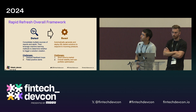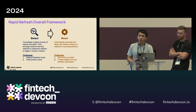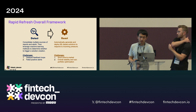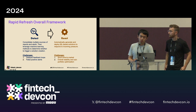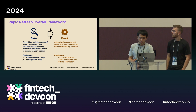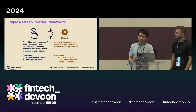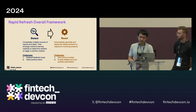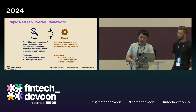Our rapid refresh framework consists of two main parts. The first part is about detection: it determines when is the right timing to trigger a solution refresh. The react part is about how to respond, by choosing the right algorithm to automatically create and deploy our solution to our live system. Each of these steps has its own challenges.